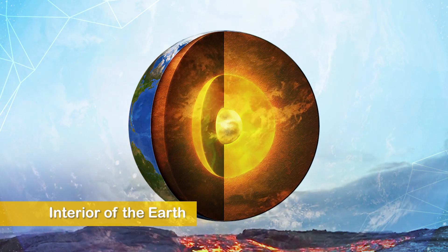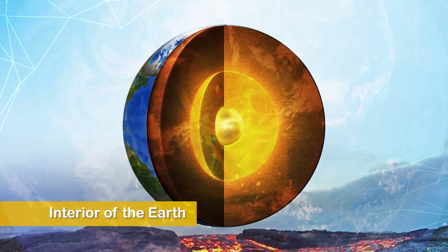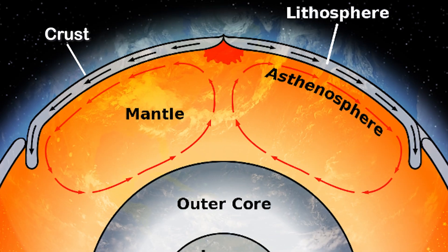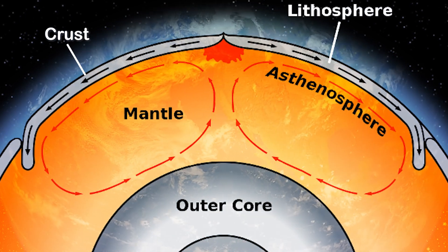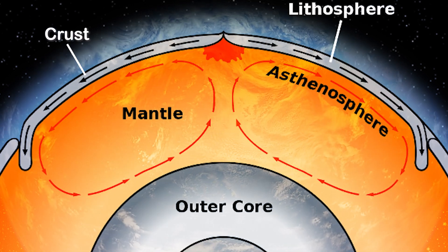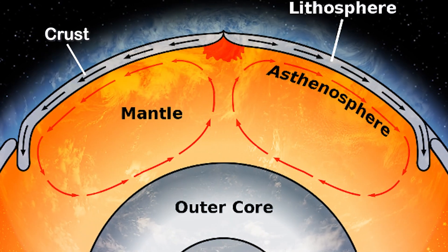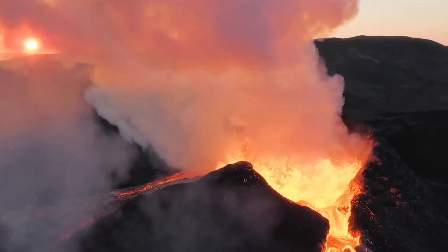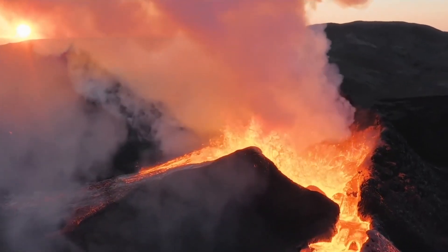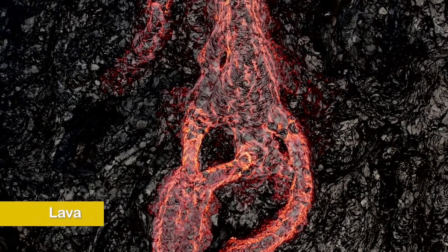In the previous sessions, especially when we discussed about the interior of the Earth, we talked about the layers inside the Earth's surface. The layer below the solid crust is the mantle. It has higher density than that of the crust. The mantle contains a weaker zone called the asthenosphere, and it is from this that the molten rock material finds its way to the surface. The material in the upper mantle portion is called magma.